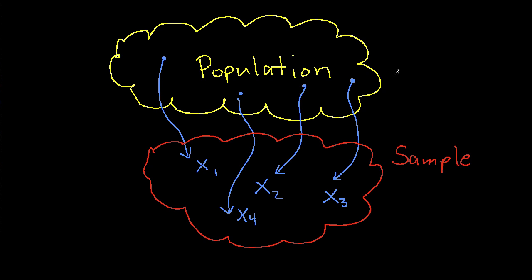One possible parameter that I might be interested in is the mean of an attribute of the population. Typically we represent means with mu.